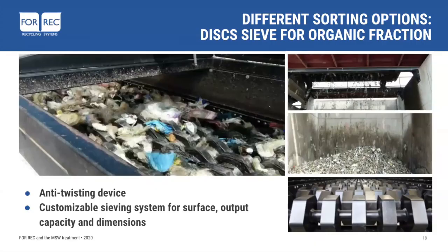The first sorting option, in the case of unsorted MSW, is represented by a disk sieve for separating the organic fraction. This is a completely heavy-duty disk sieve that avoids twisting of material between the disks, thanks to a conical or pipe anti-twisting device. It separates the organic fraction from the rest of the municipal solid waste according to dimension. The size of this machine is highly customized and normally settled based on project details, capacity, and organic content inside the municipal solid waste.